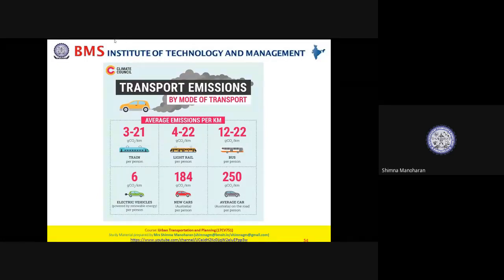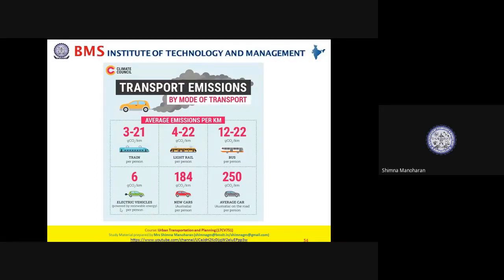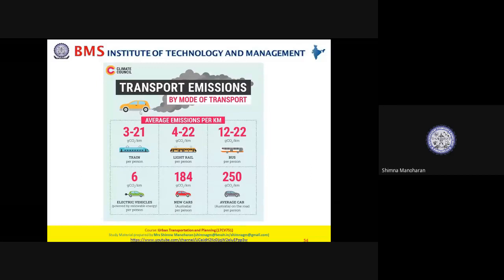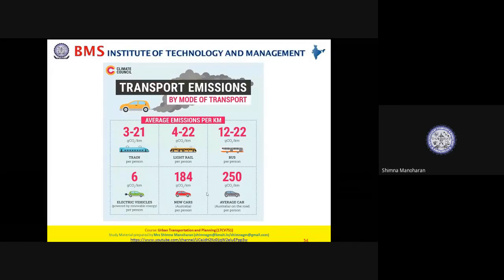For light rail it is 4 to 22 grams of CO₂ per kilometer. For an electric vehicle powered by renewable energy, emissions are really low. However, for an average car it is 250 grams of CO₂ per kilometer. The comparison clearly shows how transport emissions vary significantly as the mode of transport changes.